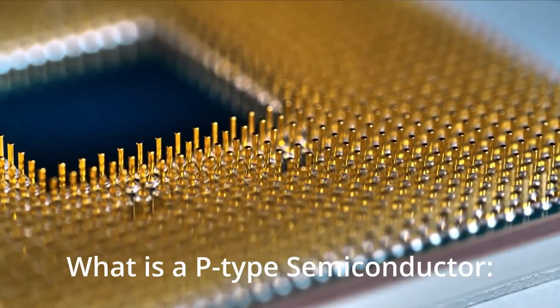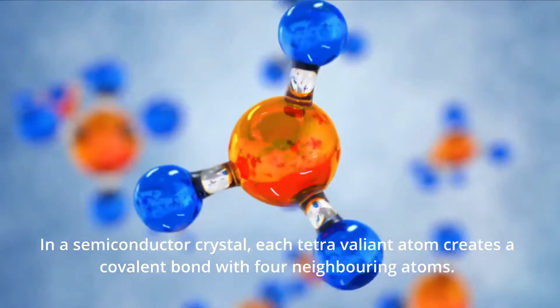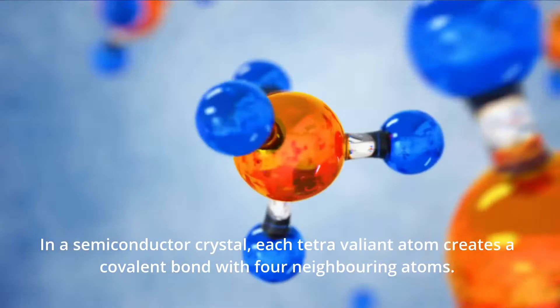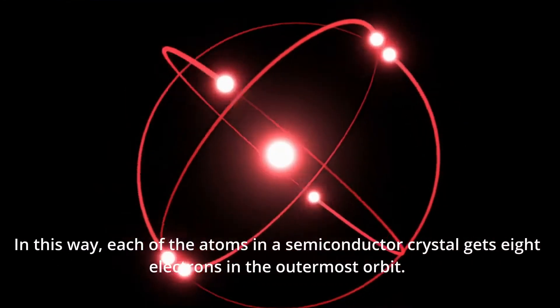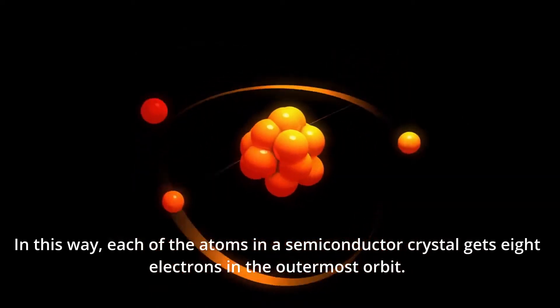What is a P-Type Semiconductor? In a semiconductor crystal, each tetravalent atom creates a covalent bond with four neighboring atoms. In this way, each of the atoms in a semiconductor crystal gets eight electrons in the outermost orbit.